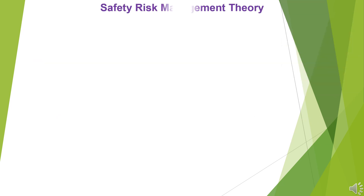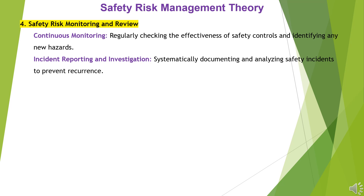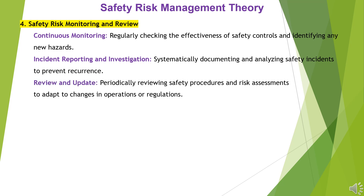4. Safety Risk Monitoring and Review. Continuous monitoring involves regularly checking the effectiveness of safety controls and identifying any new hazards. Incident reporting and investigation involves systematically documenting and analyzing safety incidents to prevent recurrence. Review and update means periodically reviewing safety procedures and risk assessments to adapt to changes in operations or regulations.